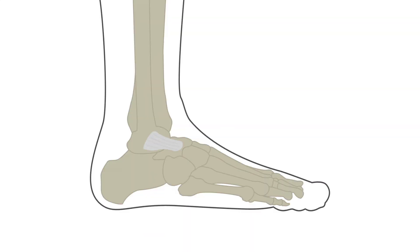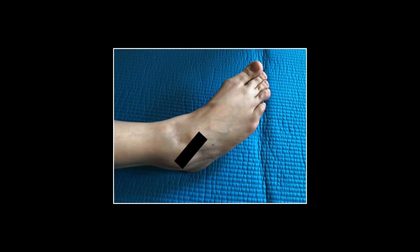We'll begin by looking at the anterior talofibular ligament, which is situated between the fibula or lateral malleolus and talus bones of the foot. The foot should be positioned in plantar flexion and inversion, as this adds a slight stretch to the ligament for optimal scanning.